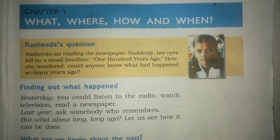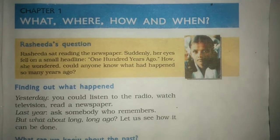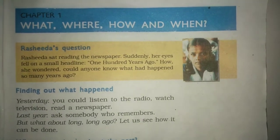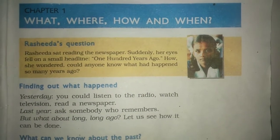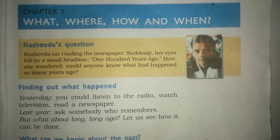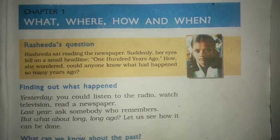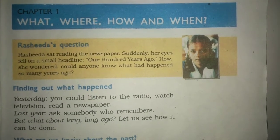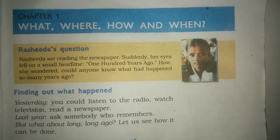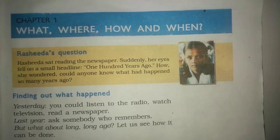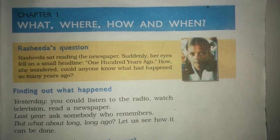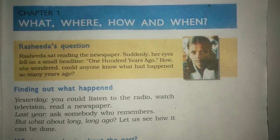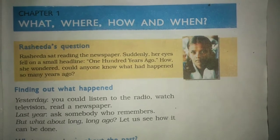Hi children, welcome to the history class. What, Where, How and When — it is the first chapter in your history textbook. First we should know about the word history. History means the past events are studied carefully and systematically on the basis of available material, remains and records.